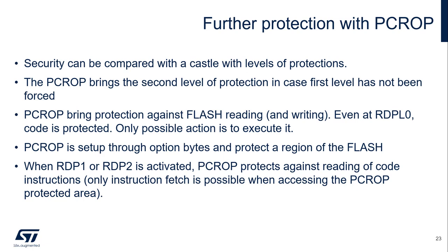PCROP is also set up through Option Bytes and can be used to protect a region of the flash. When RDP level 1 or RDP level 2 is activated, PCROP protects against reading of code instructions. Only instruction fetch is possible when accessing the PCROP-protected area. This is true not only through the debug port, but also through the code itself — meaning even the code cannot read the content of the flash.